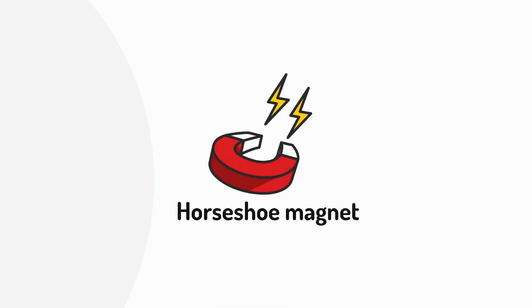Horseshoe magnets: these are basically bar magnets bent into a U-shape. This brings the poles closer together, concentrates the magnetic field, and makes them stronger for lifting.